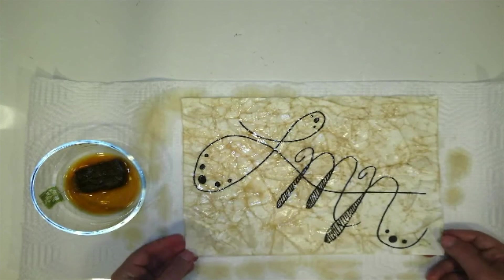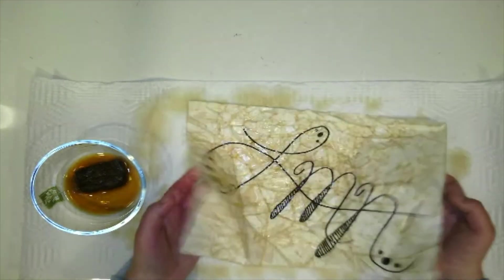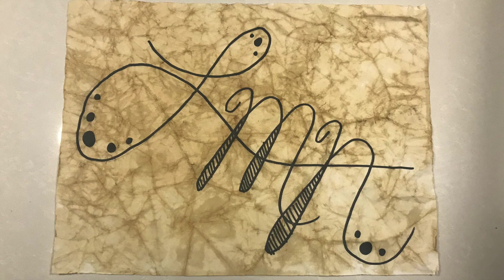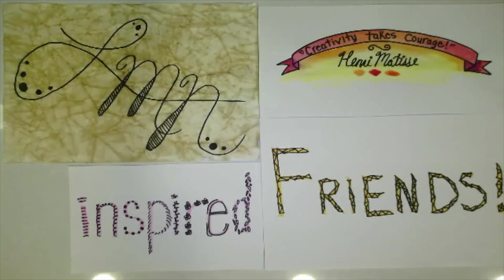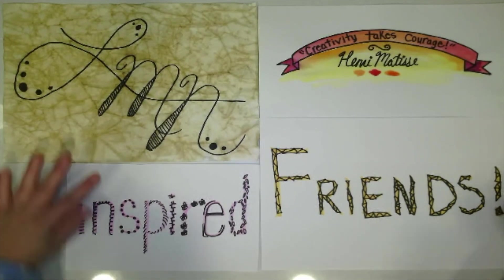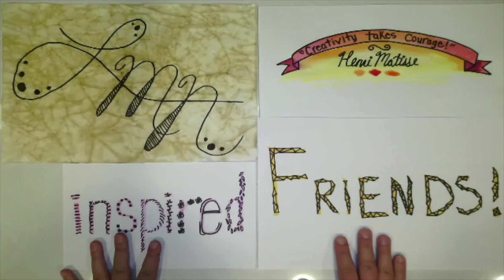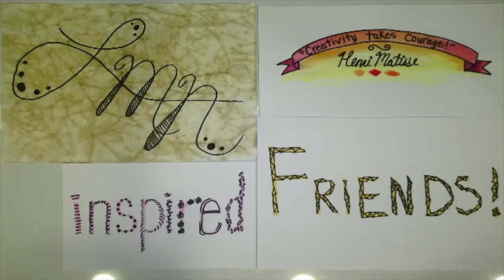So I'm going to let this dry. I could either use a hair dryer to speed it up or I could let it air dry. Okay and then here are the four different types of calligraphy that we did together today. So you can do one or as many as you would like. Can't wait to see what you make on Seesaw.